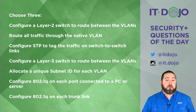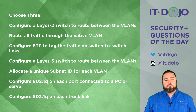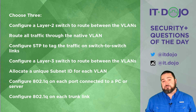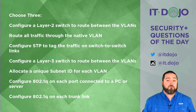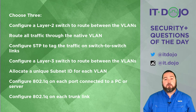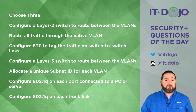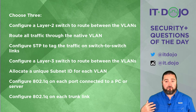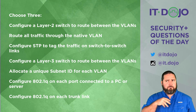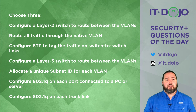Your first answer choice says configure a Layer 2 switch to do inter-VLAN routing. No — Layer 2 switches deal exclusively with MAC addresses and cannot route between VLANs. The next choice says route all traffic through the native VLAN — that's a made-up distractor. The statement doesn't make any sense; you can't route traffic through the native VLAN to reach all other VLANs. That's not how it works.